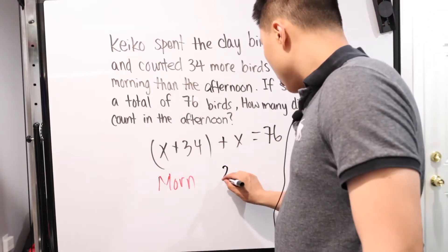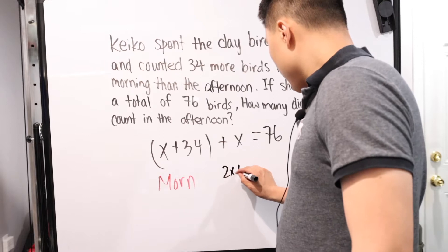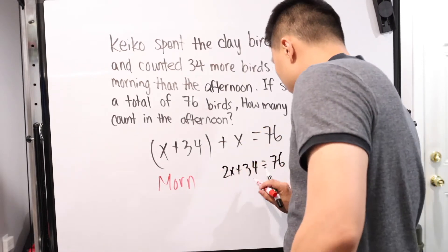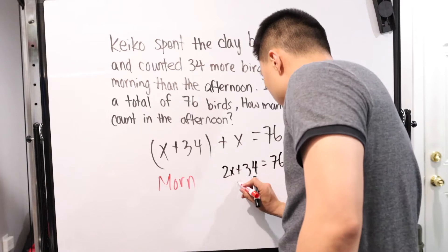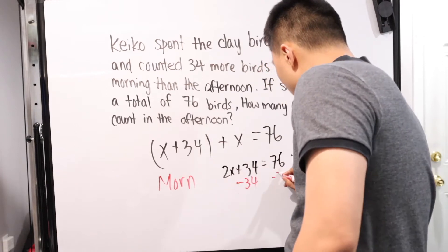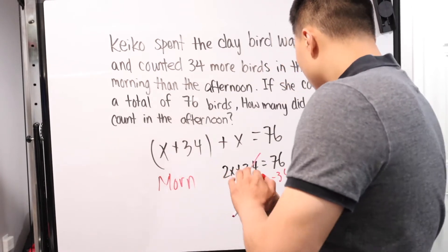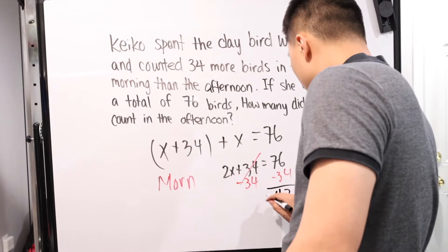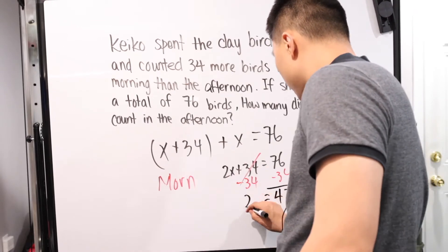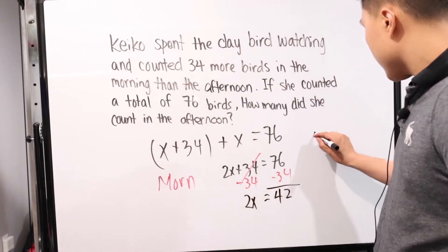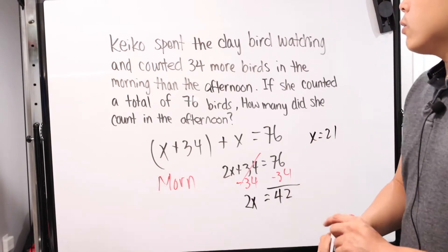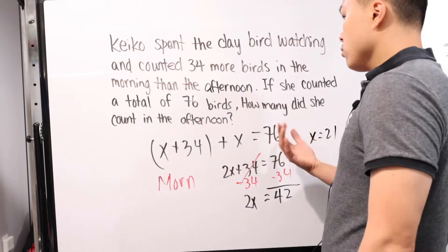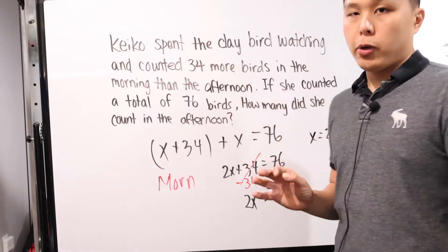This gives us 2X plus 34 equals 76. We subtract 34 from both sides — that goes away — and we have 42 equals 2X. Then divide by 2 on both sides, and X equals 21. So in the afternoon, Keiko counted 21 birds.